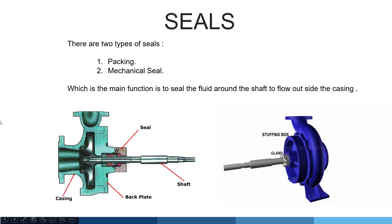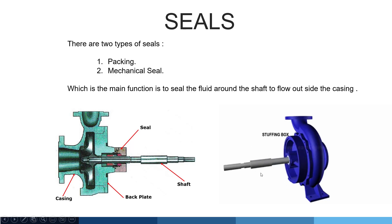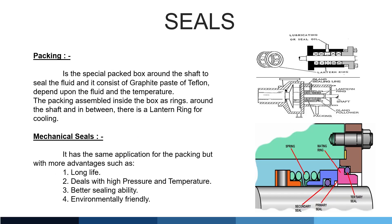Seals. There are two types of seals: packing and mechanical seals. Their main function is to seal the fluid around the shaft to prevent flow outside the casing. Packing is a special packed box around the shaft consisting of graphite-based or Teflon material, depending on the fluid and temperature. The packing is assembled inside the box as rings around the shaft, with a lantern ring in between for cooling. Mechanical seals have the same application as packing but with more advantages such as long life, ability to deal with high pressure and temperature, better sealing ability, and environmental friendliness.